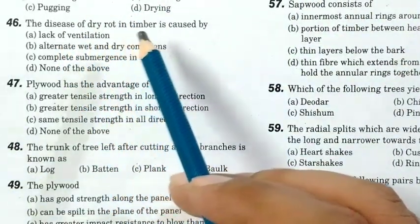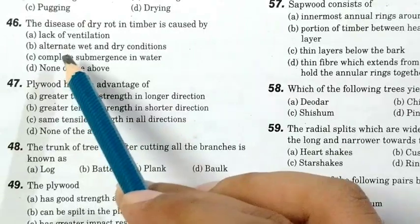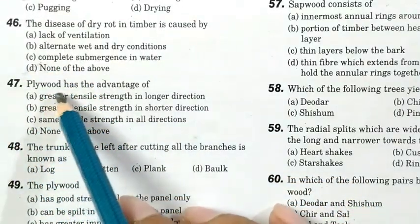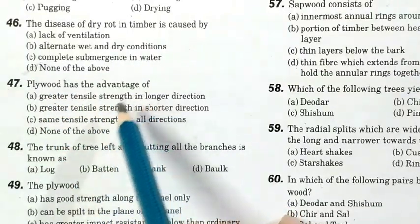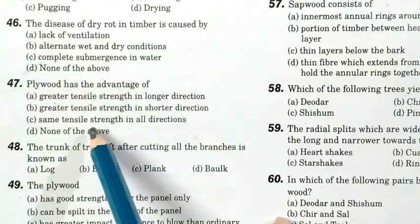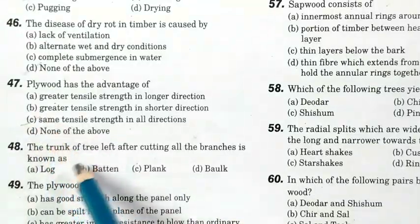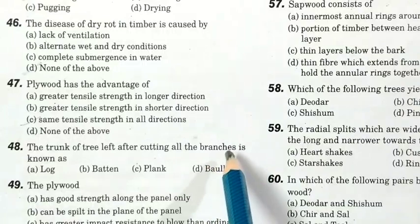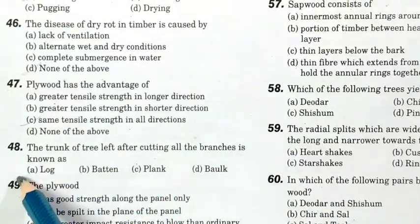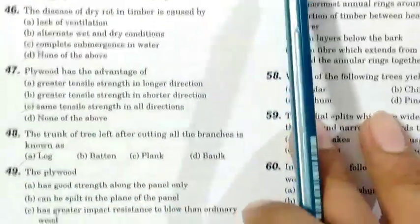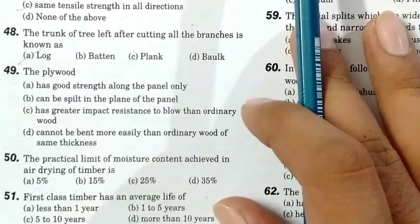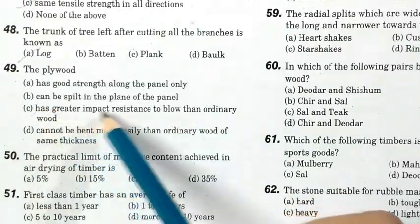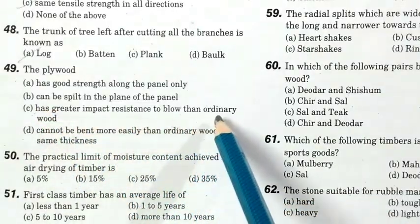The disease of dry rot in timber is caused by a fungus. Plywood has the advantage of same strength in all directions. The trunk of the tree left after cutting the branches is known as a log. Plywood has greater impact resistance than ordinary wood.